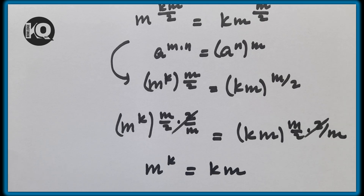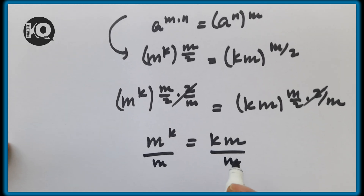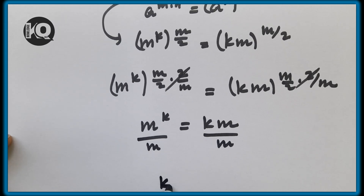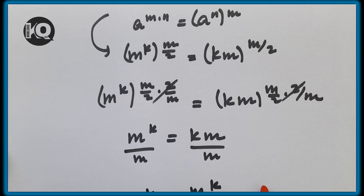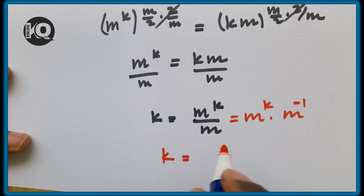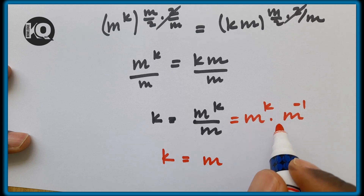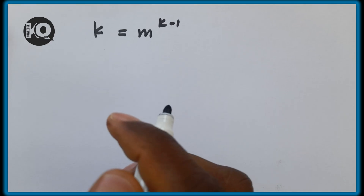Dividing both sides by m, we get k equals m^k divided by m, which can be written as m^k times m^(−1). Since we have the same base, summing exponents gives k equals m to the power of (k − 1).